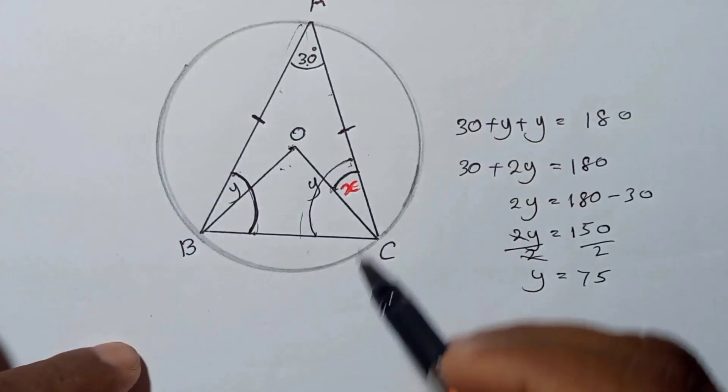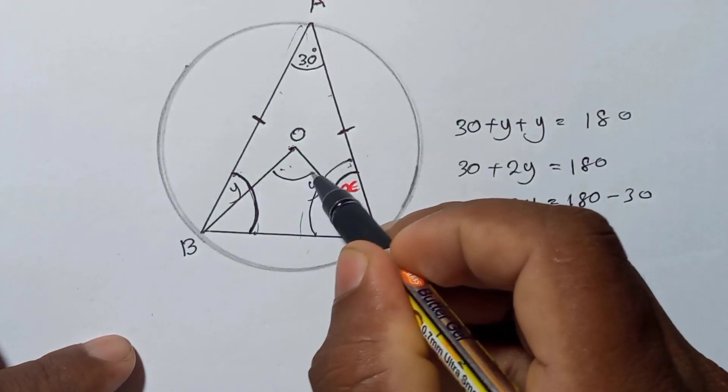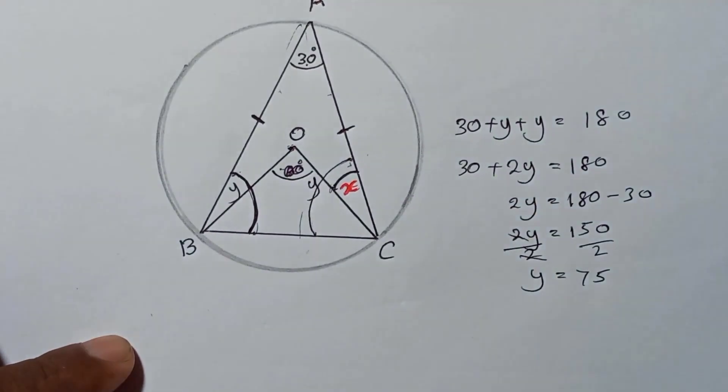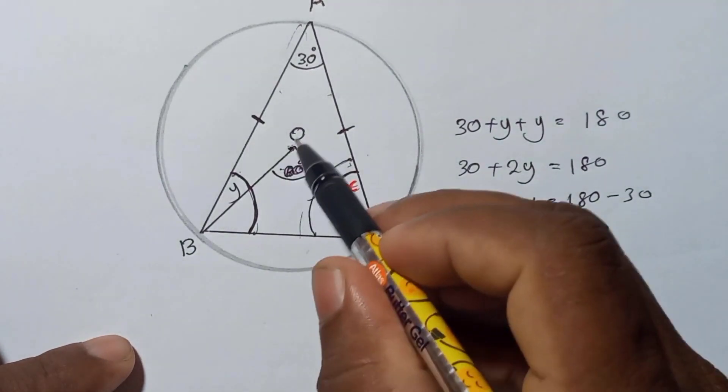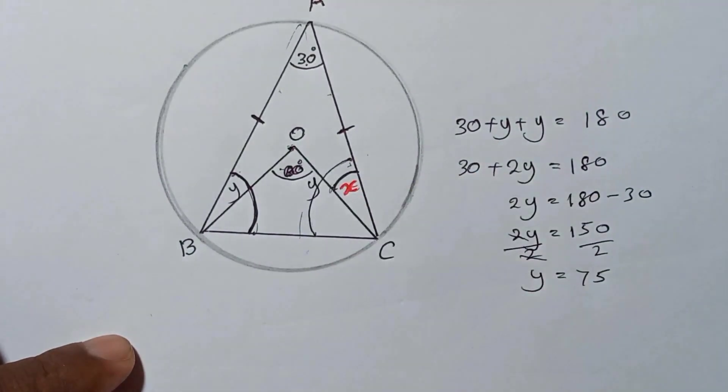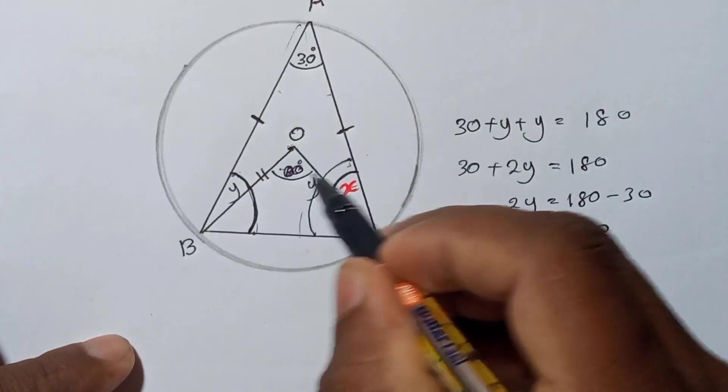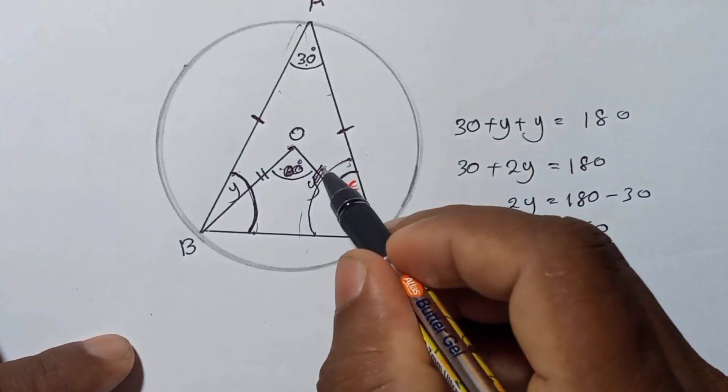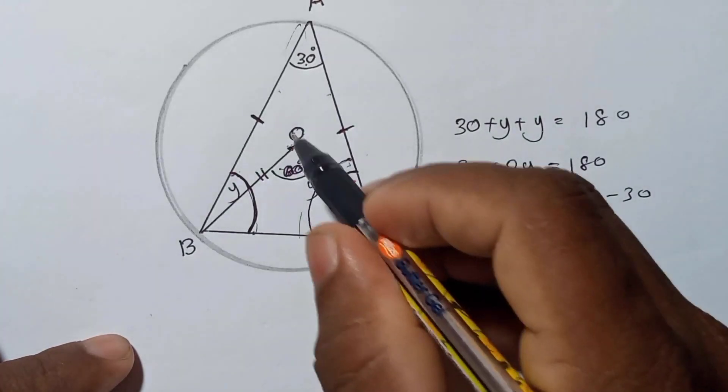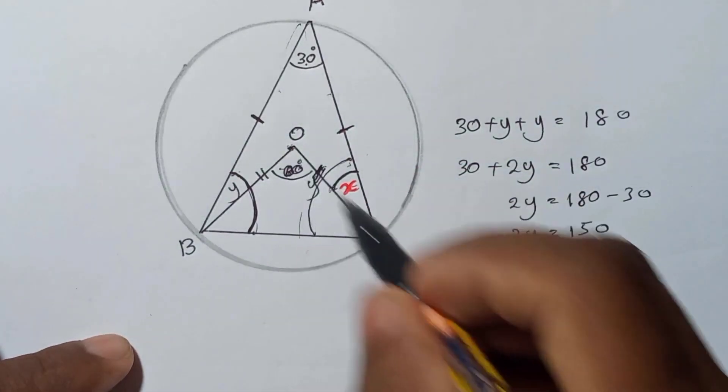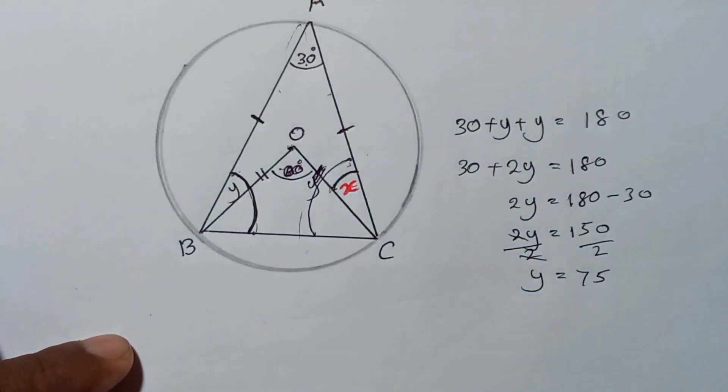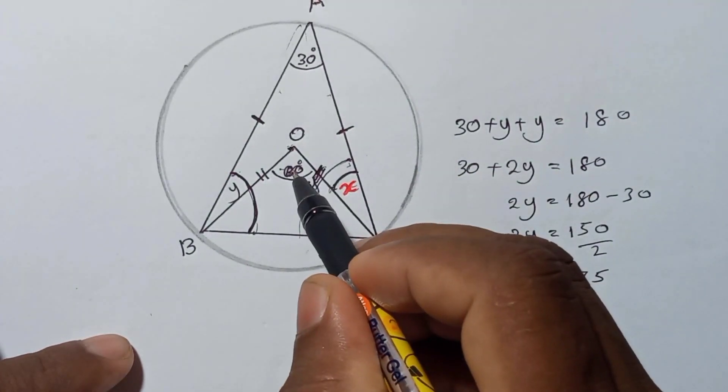This is twice angle at center is twice the angle at circumference. Here from the same two points must go, so here 60, here 60. Not only that, OB equals OC because this is a radius, these are radii OB and OC, radius of same circle.